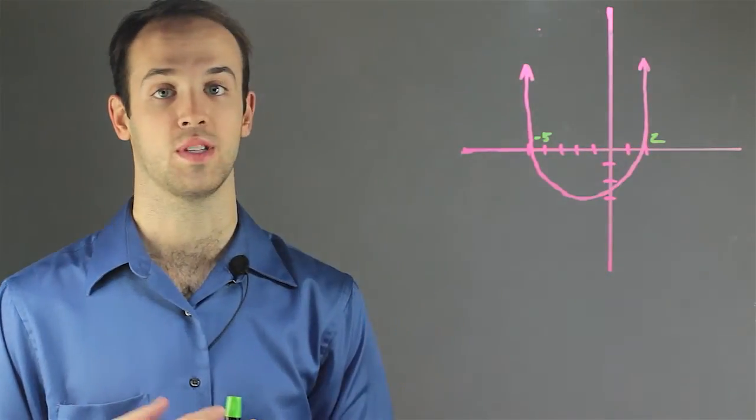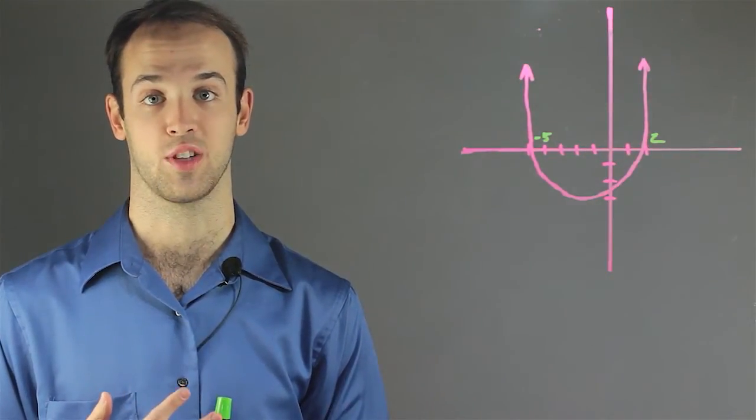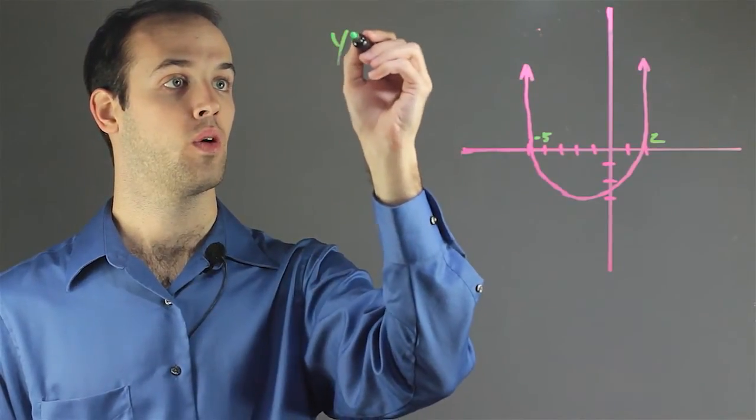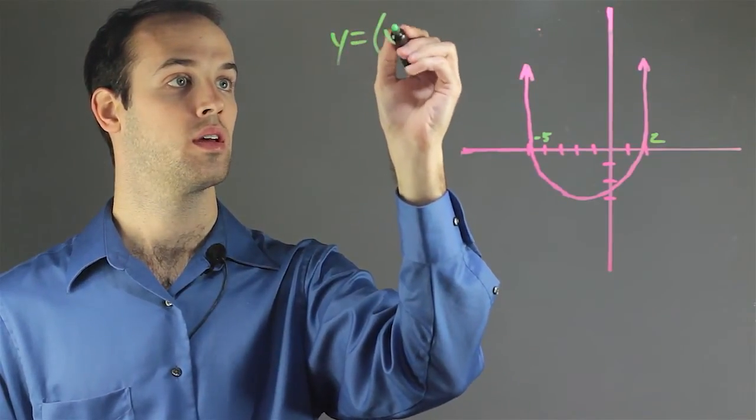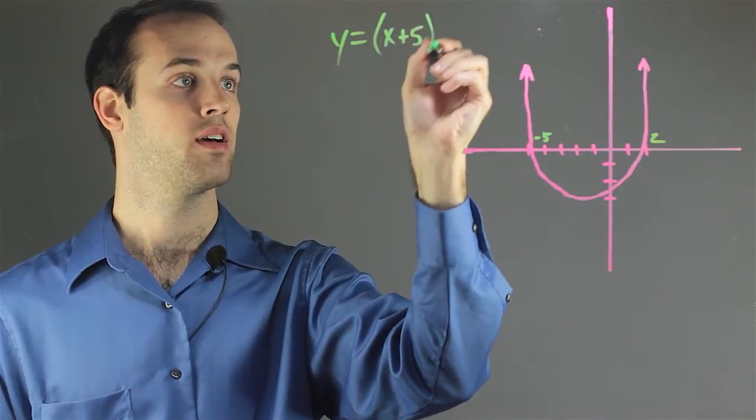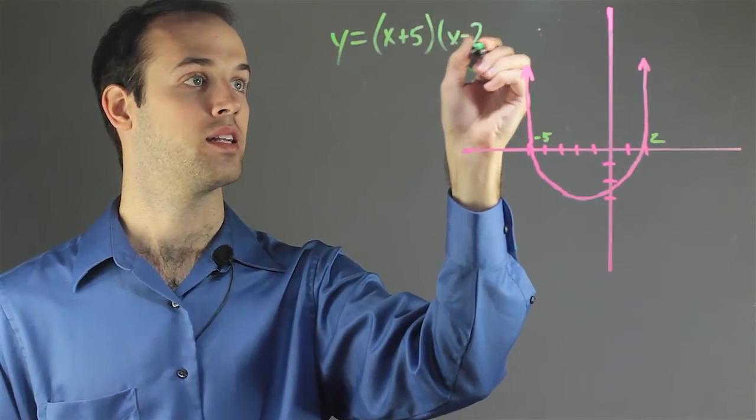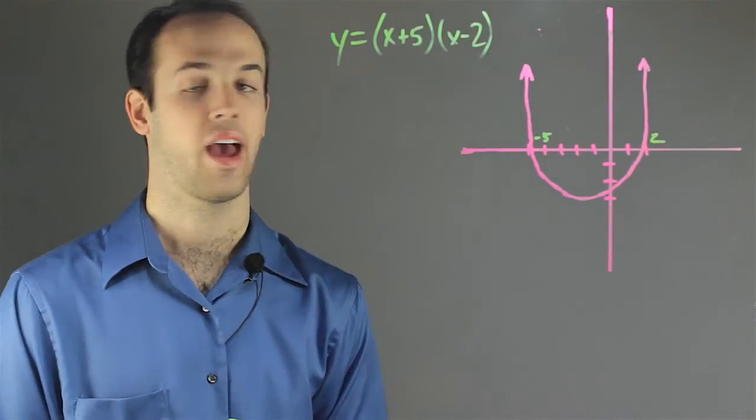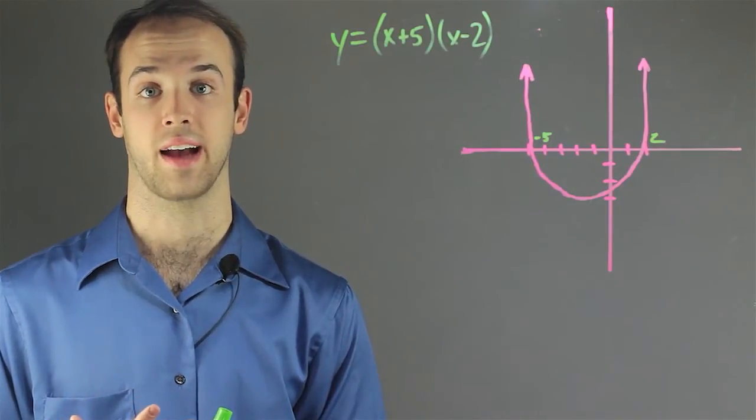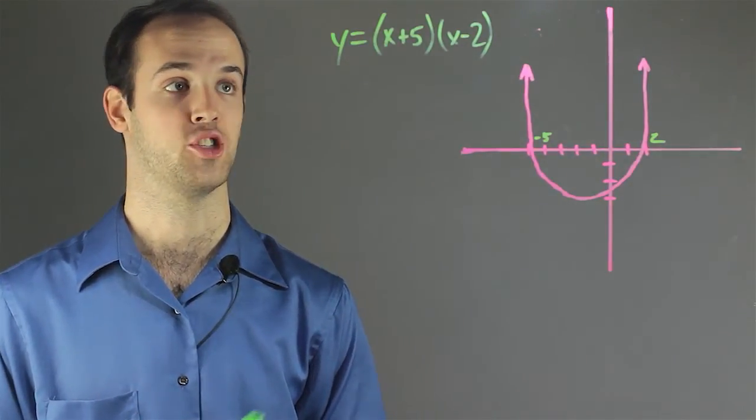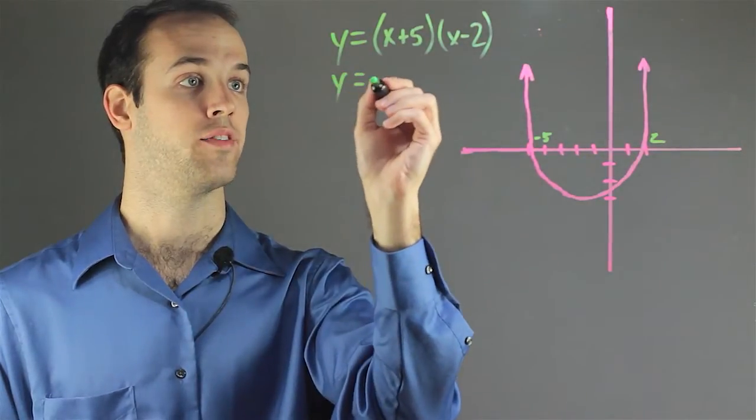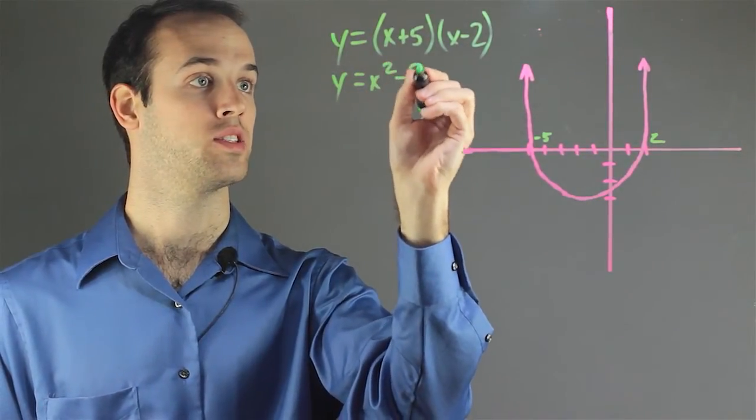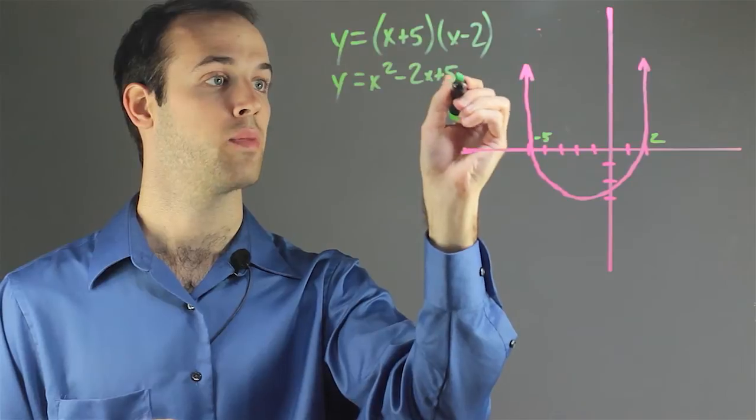So if we use negative 5 and 2 to generate this equation, we would have y equals x plus 5 and x minus 2. And then from there we're going to FOIL it to get back to ax squared plus bx plus c formation. So we have y equals x squared minus 2x plus 5x minus 10.